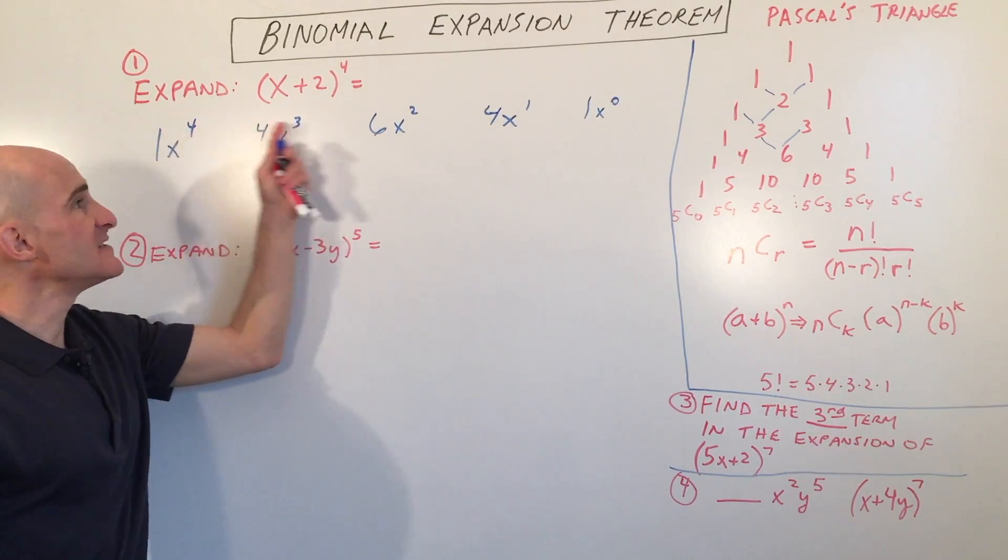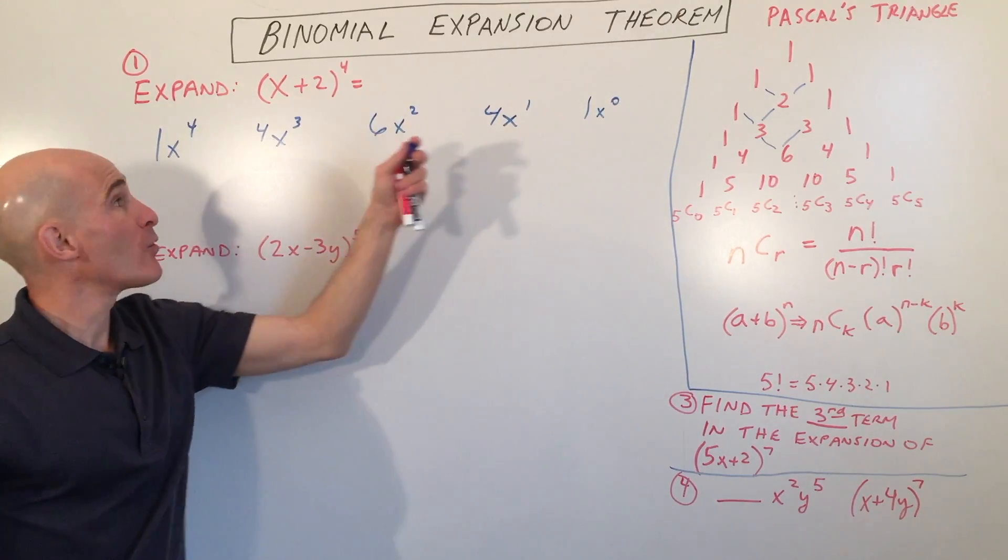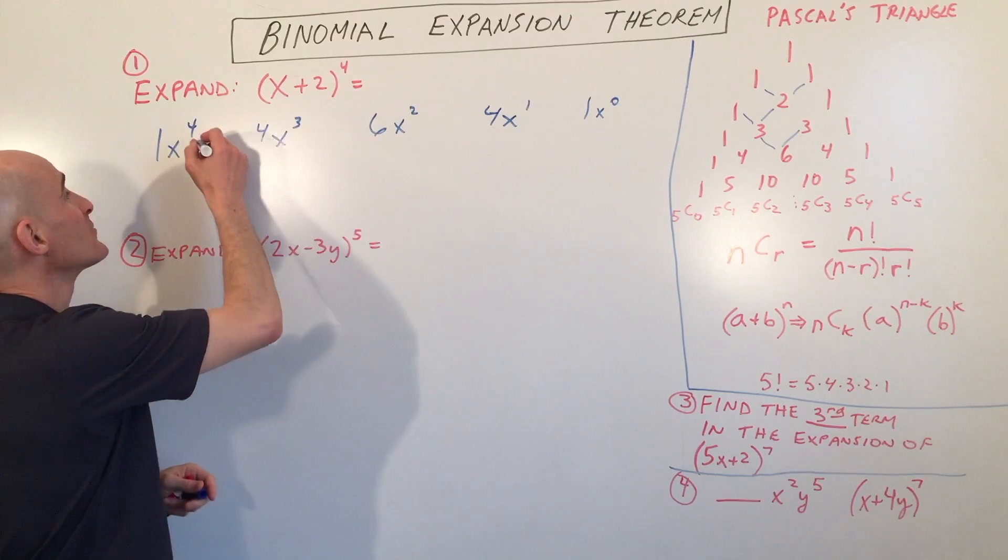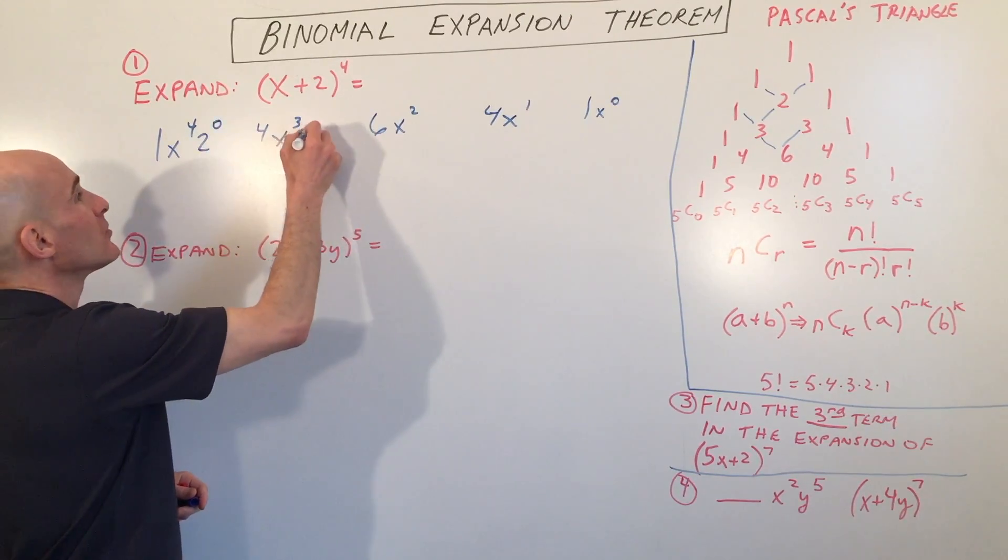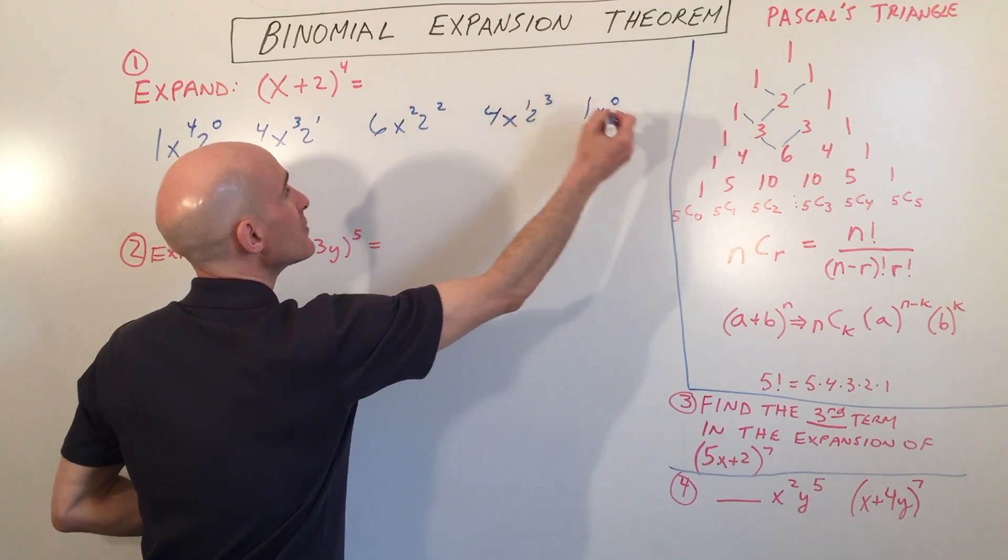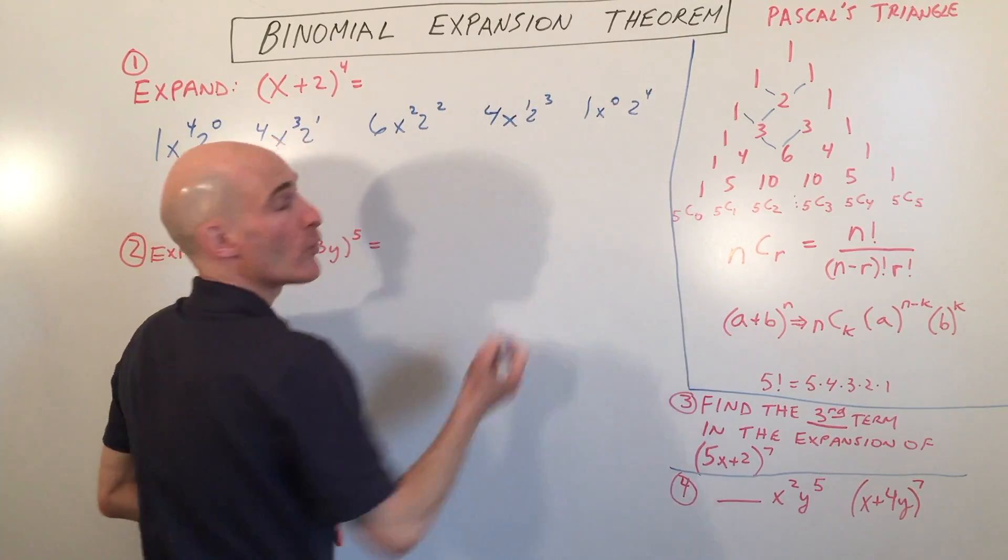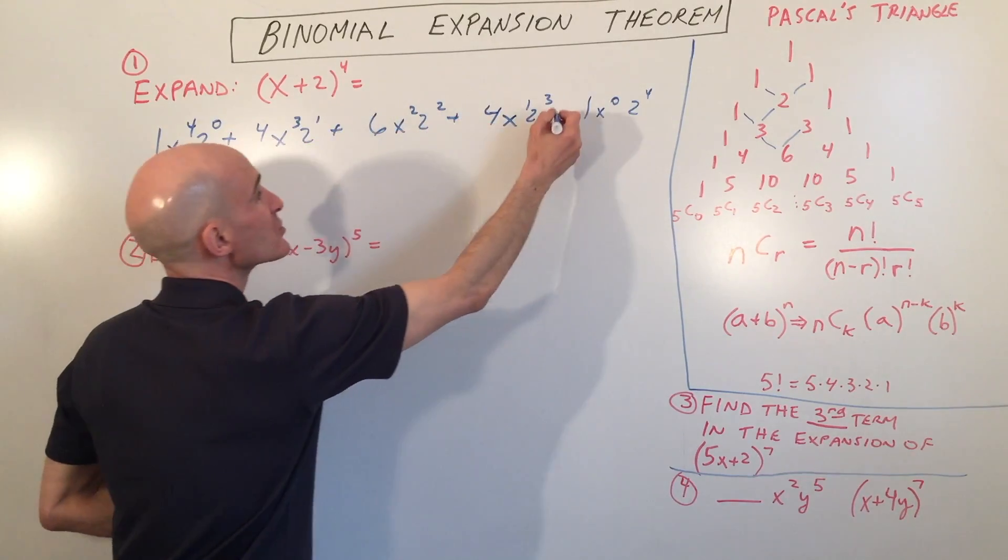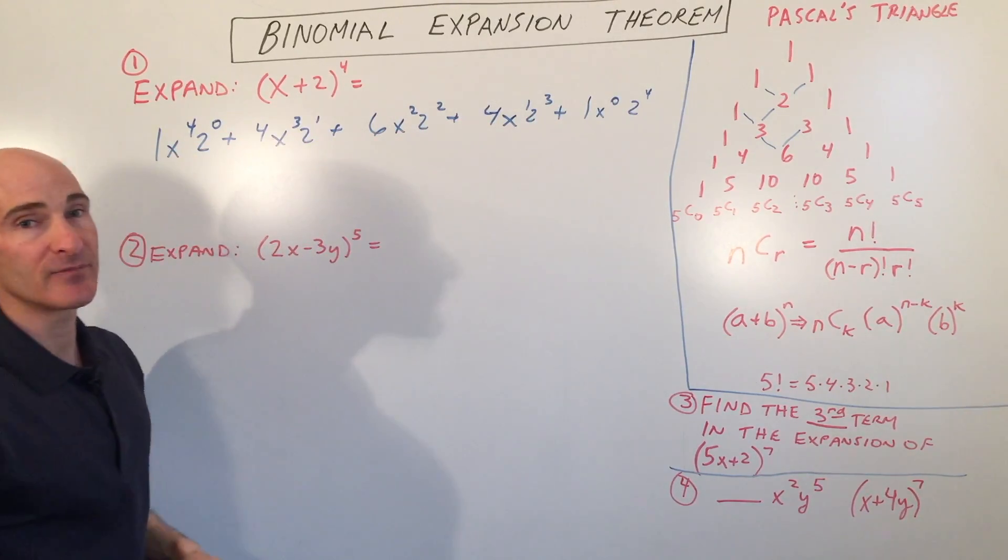So that first term, you can see we're going in descending order. Then what we're going to do is we're going to take the second term, and we're going to go in ascending order. So that's going to be like this: 2 to the zero, 2 to the first, 2 to the second, 2 to the third, 2 to the fourth. And in between all these terms, we're just going to have a plus sign.